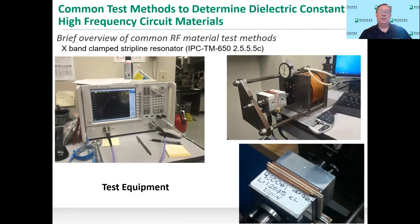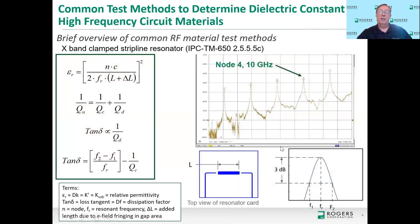Here are pictures of the equipment: on the left, the network analyzer we're using; on the upper right, a wider view of the clamped fixture mechanism; and on the bottom right, zoomed in closer. You can see two tan pieces of dielectric material being tested, very thin copper sheets on both sides providing the electrical ground, and then the large aluminum clamps. After making the laminate, we etch off all the copper, place the two pieces of material inside this fixture, clamp it together, and it becomes a stripline structure.